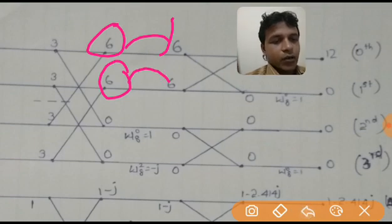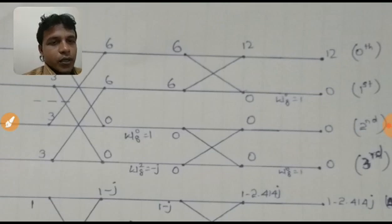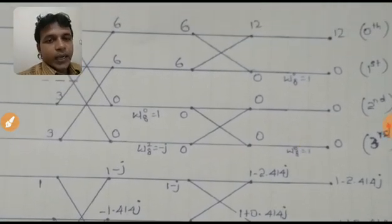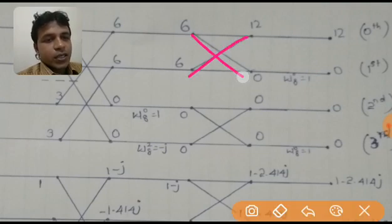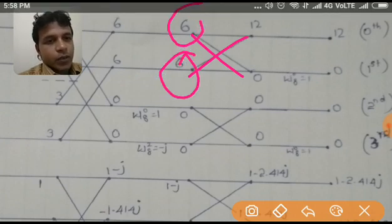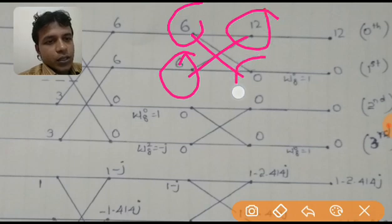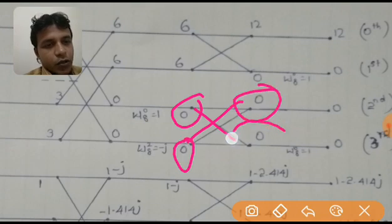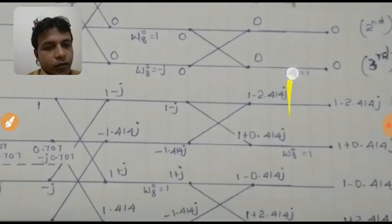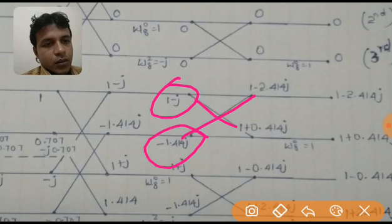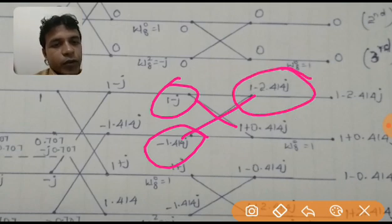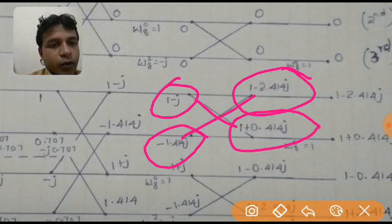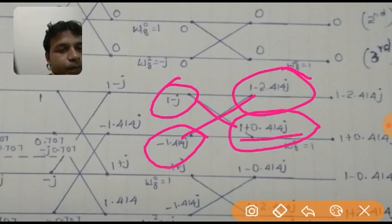In stage 3 (the last stage) we again have four butterflies, and A and B are immediately adjacent. For the first butterfly: A = 6, B = 6, so A+B = 12 and A−B = 0. For the second butterfly: A+B = 0 and A−B = 0. For the third butterfly: A = 1−j, B = −1.414j, so A+B = 1 − j + (−1.414j) = 1 − 2.414j, and A−B = 1 − j − (−1.414j) = 1 + 0.414j.